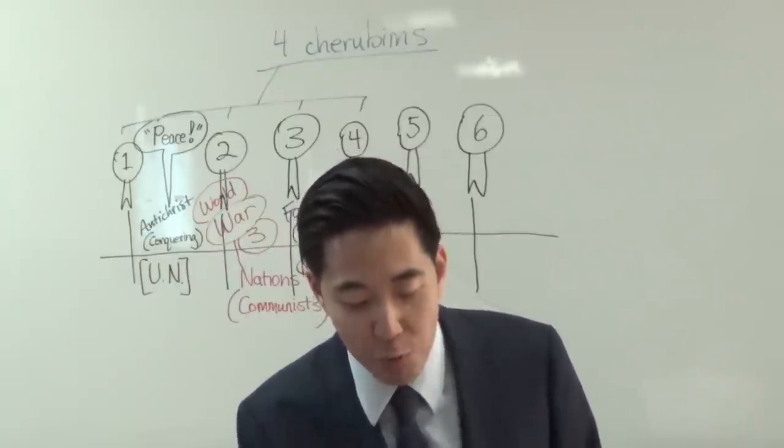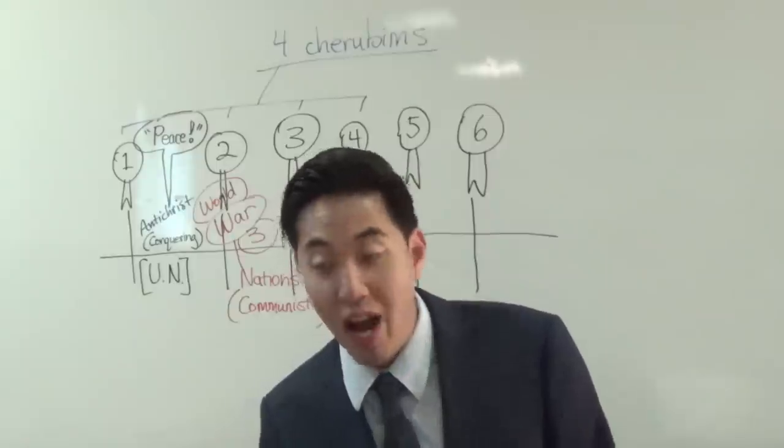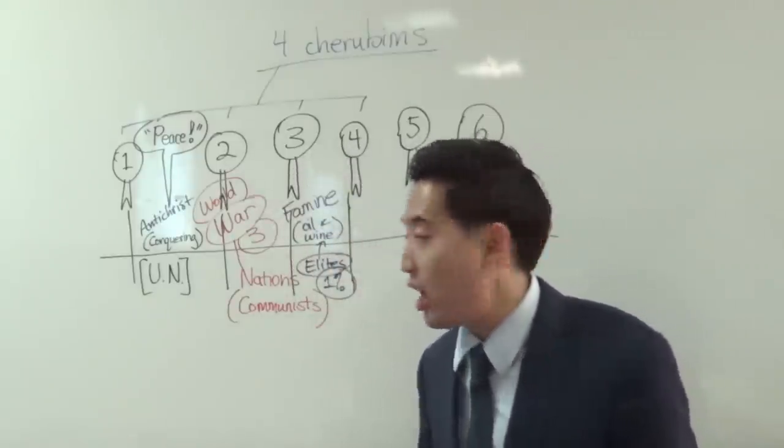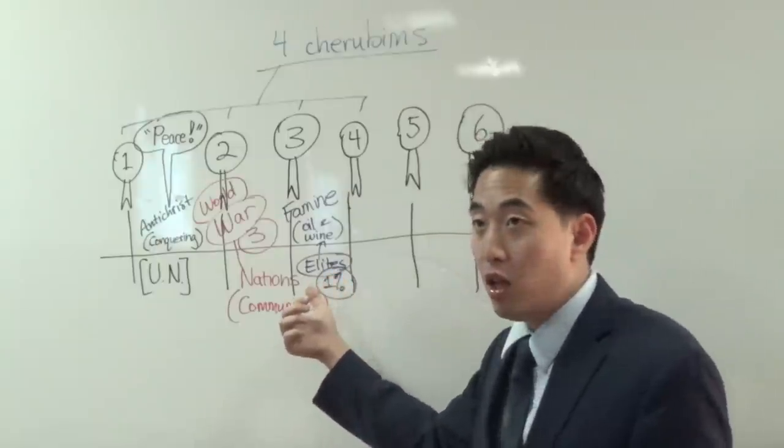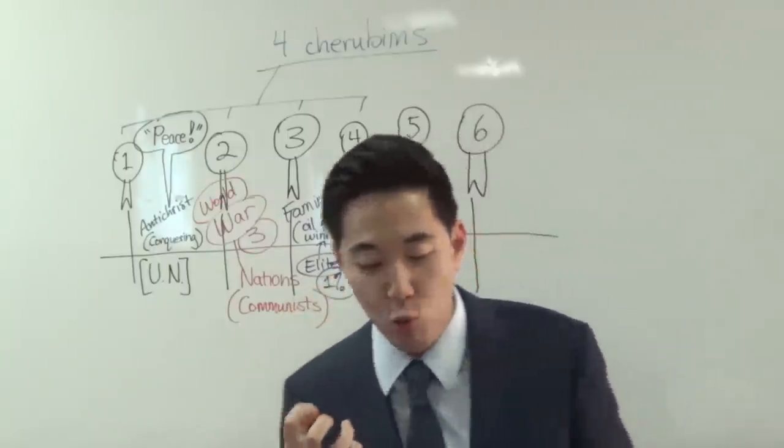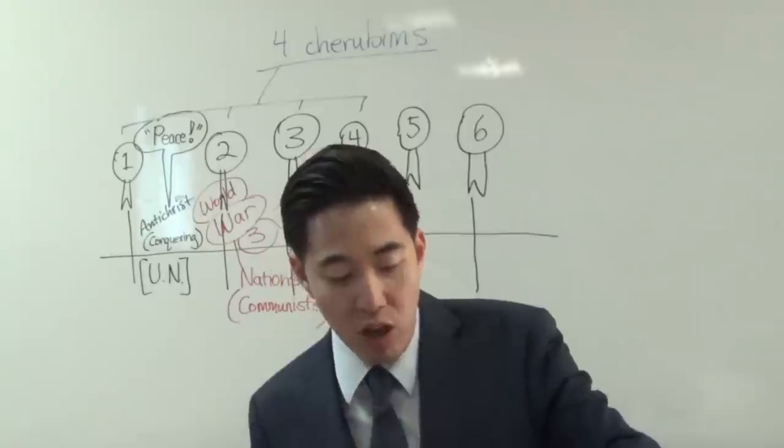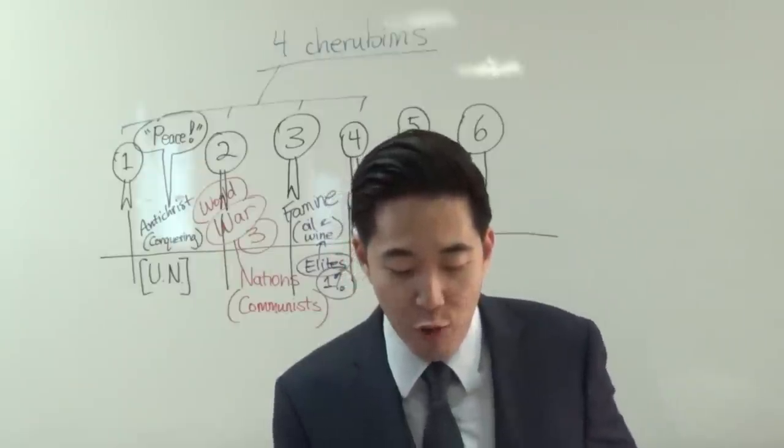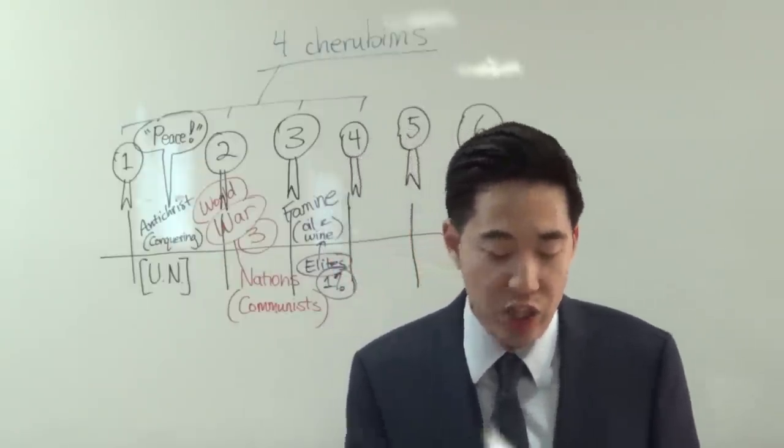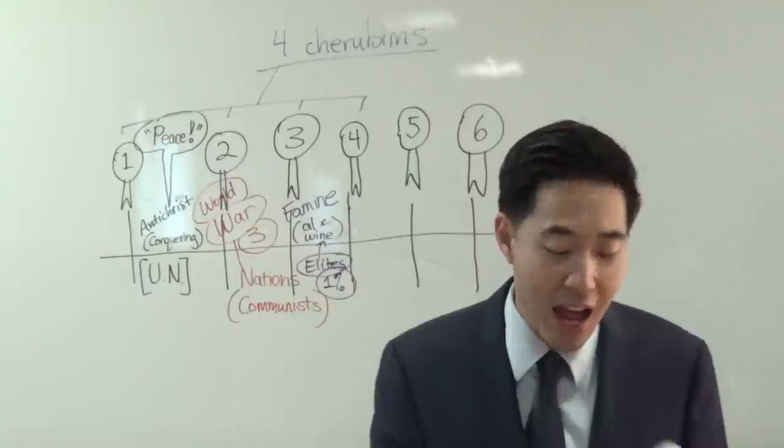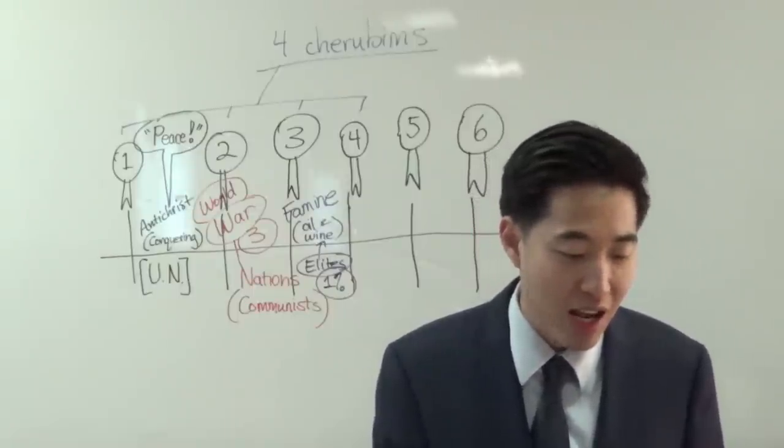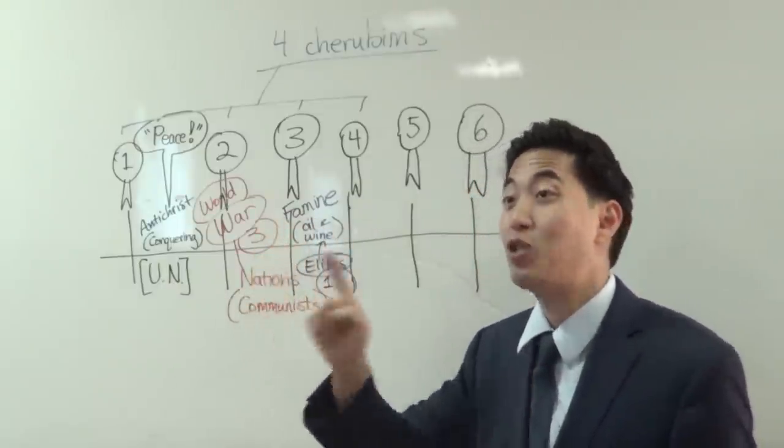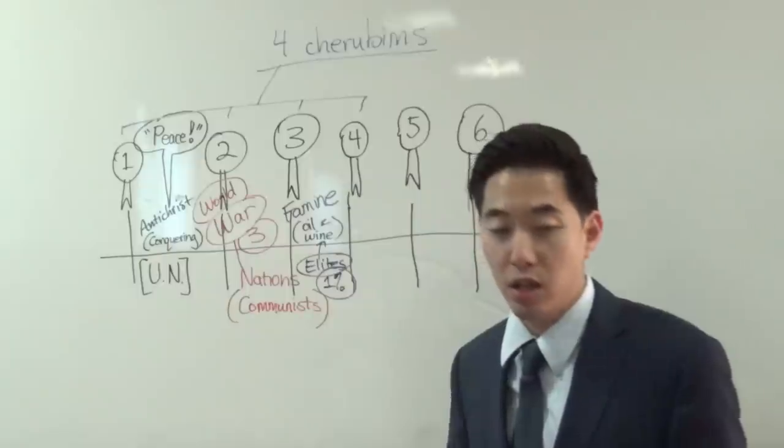But look at the last part. 'Ye have heaped treasure together,' they were hoarding it, 'treasure together for the last days.' That's tribulation. Rich people at the tribulation hoarding their wealth. This 1% elite. But look what they do at verse 4. 'Behold, the hire of the laborers who have reaped down your fields, which is of you kept back by fraud crieth.' They're holding back the food from them. That's what's going to happen in the last days.